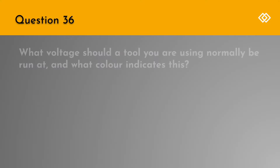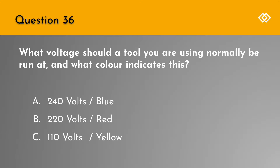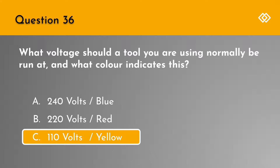Question 36. What voltage should a tool you are using normally be run at, and what colour indicates this? A. 240 volts and blue. B. 220 volts and red. Or C. 110 volts and yellow. The correct answer is C. 110 volts and yellow.